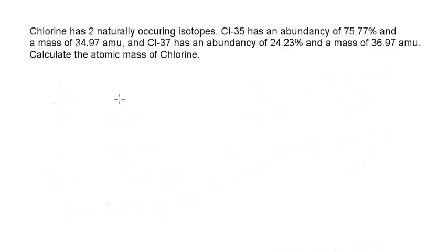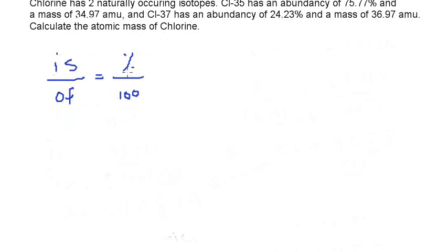To calculate the atomic mass, the first thing you do is set up your equation, which is 'is over of' equals 'percent over 100'. This is what we're looking for because this is the part of the total, the total being the total mass. The total mass of chlorine-35 is 34.97, so that's going to go down here.